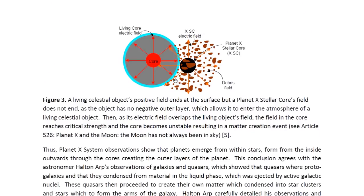And here I explain why this matter creation event occurs whenever a Planet X system stellar core closely approaches one of the living solar system objects. In this case, I think I meant this to be the Earth, so this would be the Earth's core. These are the outer layers of the Earth. The Earth's core produces a strong positive electric field that ends just below the surface.